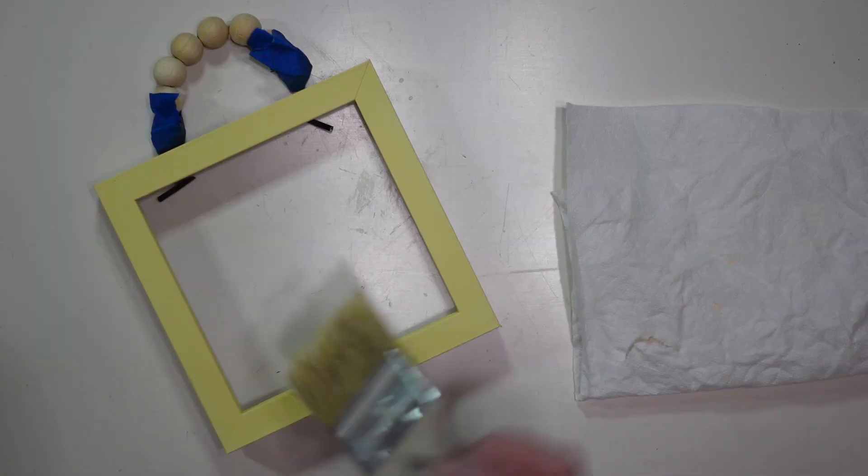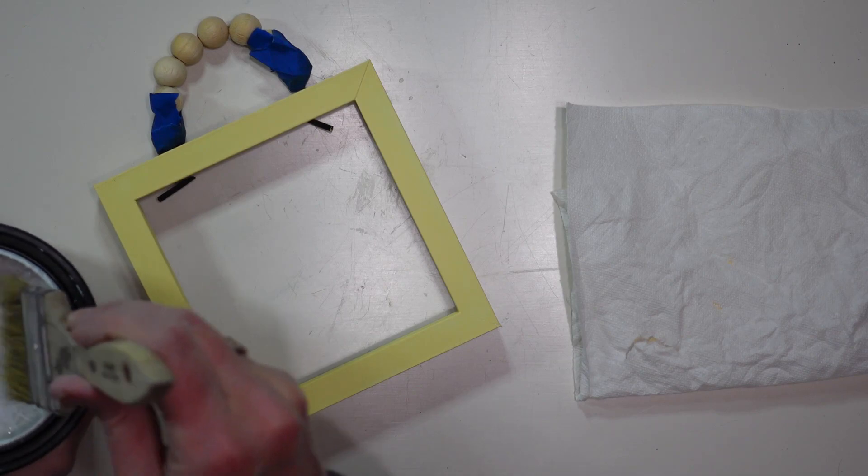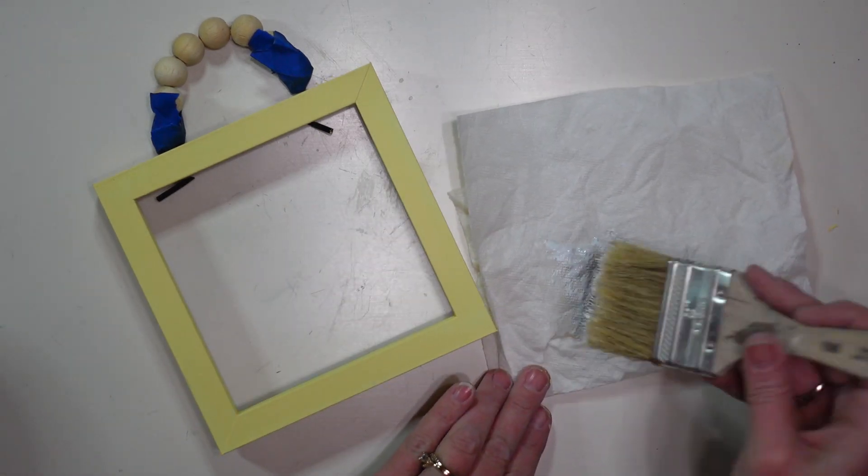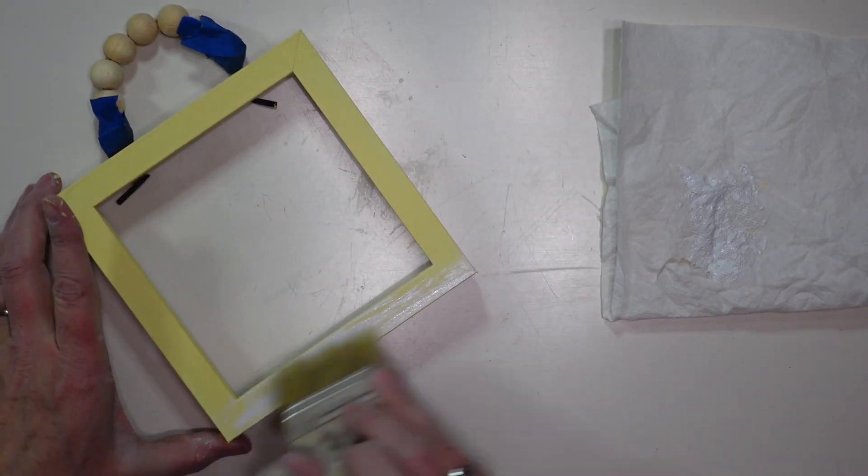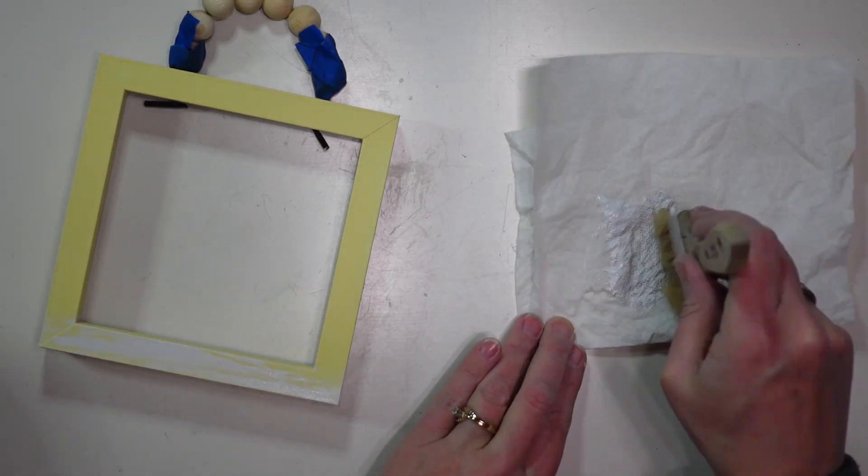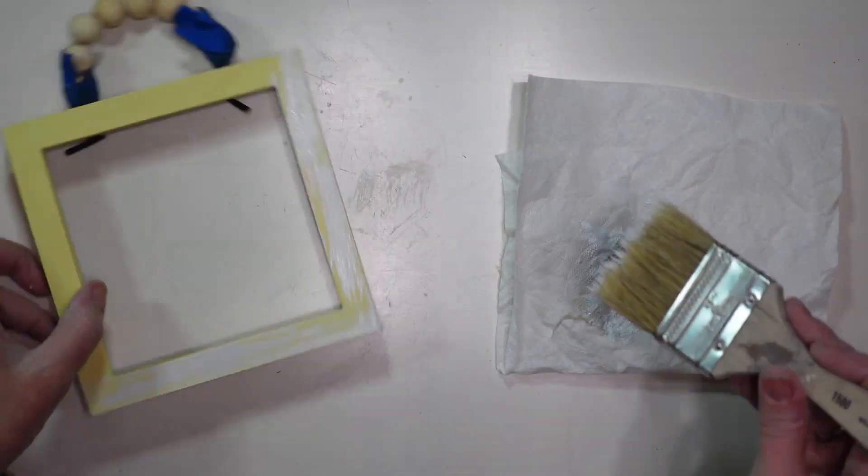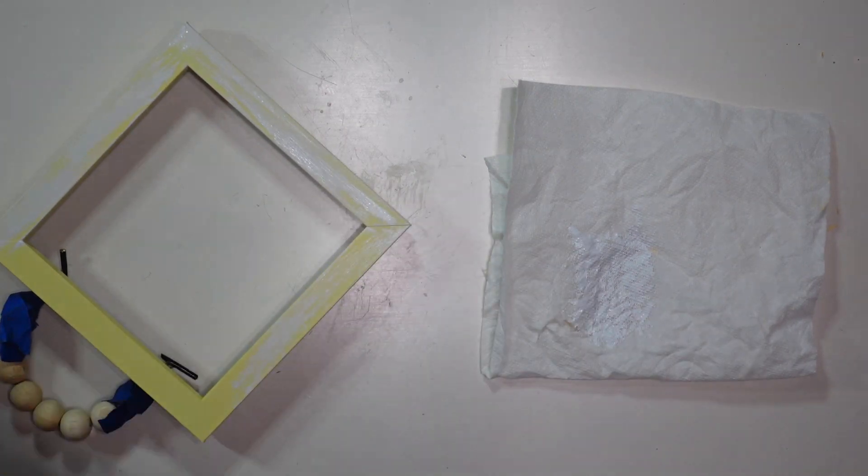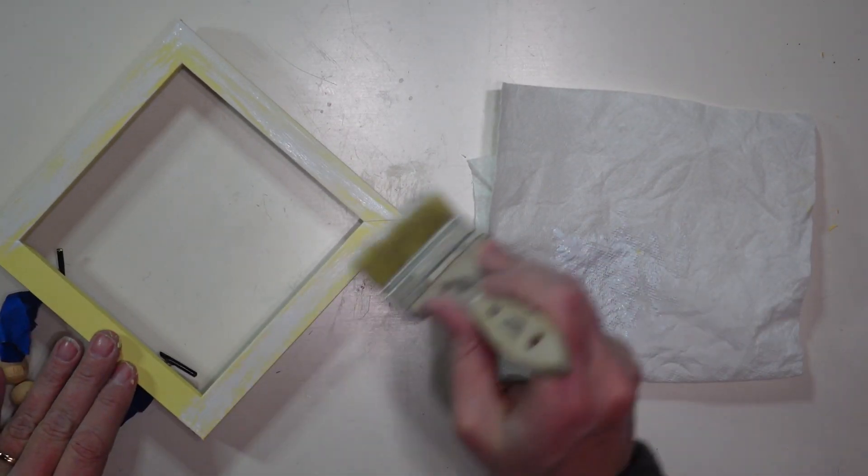Once my yellow paint is dry, I am going to take a dry chip brush and some white paint and I am going to do a heavy dry brush on this frame. I want it to not be so bright yellow but I do want parts of that yellow paint just showing through.